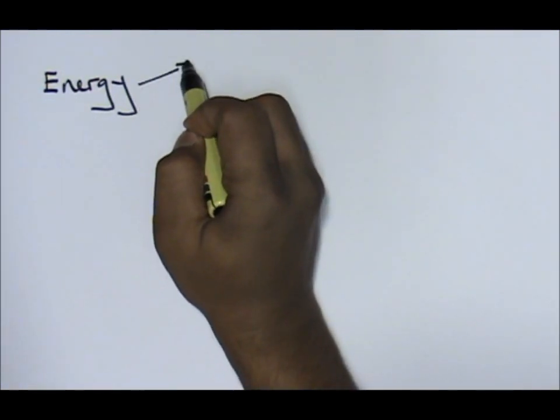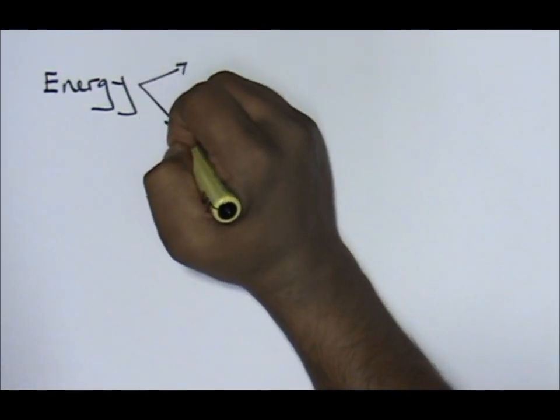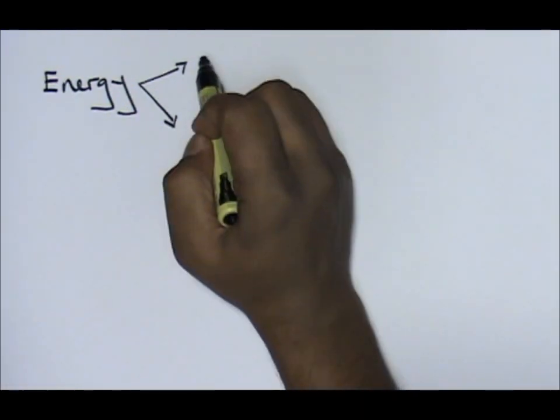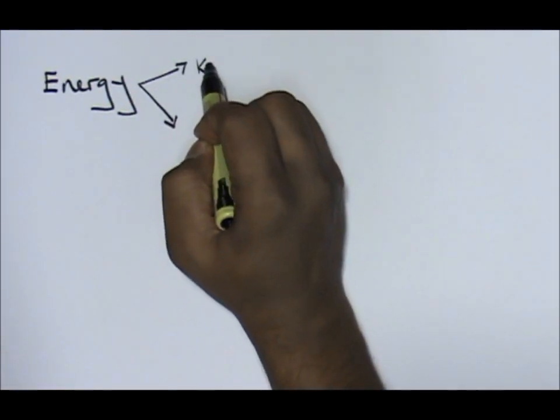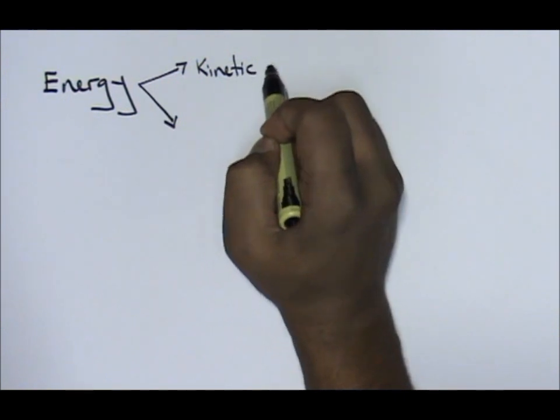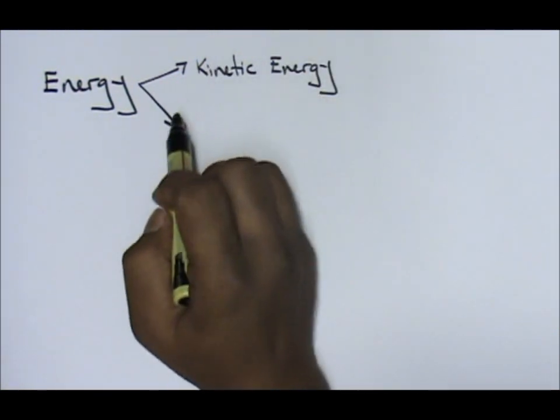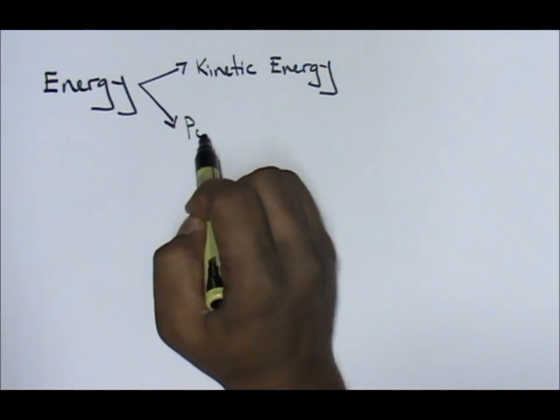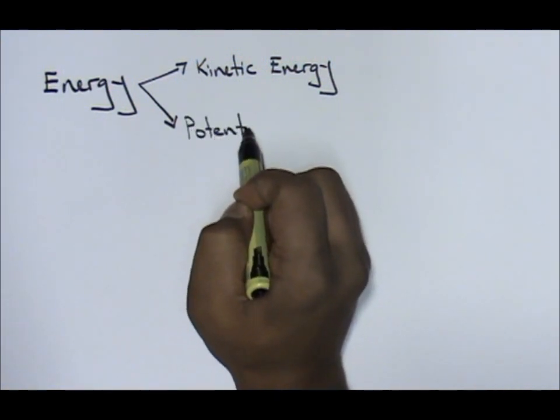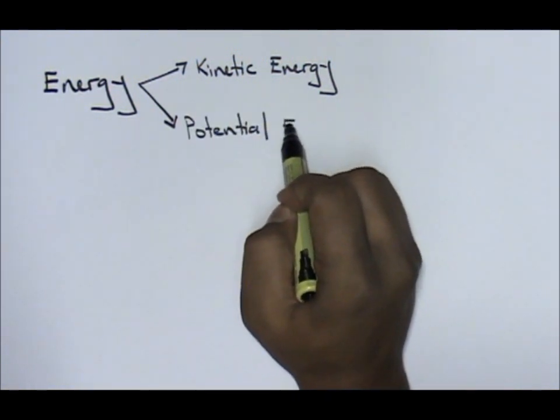Now energy in form 4 is divided into 2. You will have your kinetic energy, and you will have your potential energy.